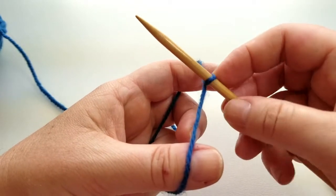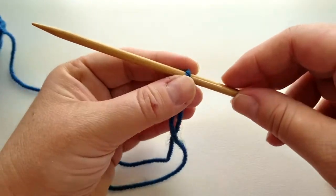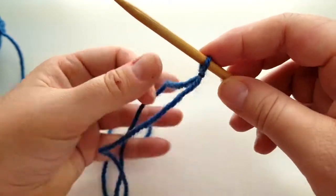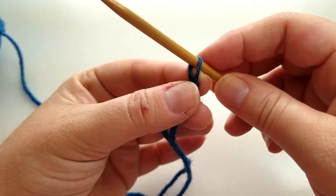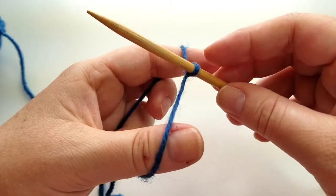And you want to tighten it, not too tight. You should be able to slip it fairly easily. You don't want it too loose either because then your stitches won't be the proper size. So I just kind of pull it until it stops.